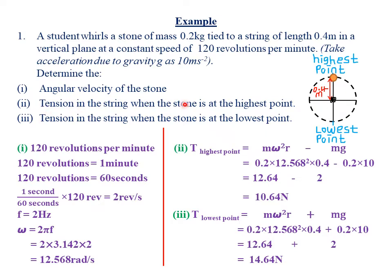Roman numeral 2: find the tension in the string when the stone is at the highest point. This is the center of rotation, and the stone is being rotated in a vertical circle. At the highest point, the tension is given by T = mω²r minus mg, because the weight acts downwards, opposing the direction of rotation. I use mω²r because I already have the angular velocity. You can also use mv²/r − mg if given the linear velocity.